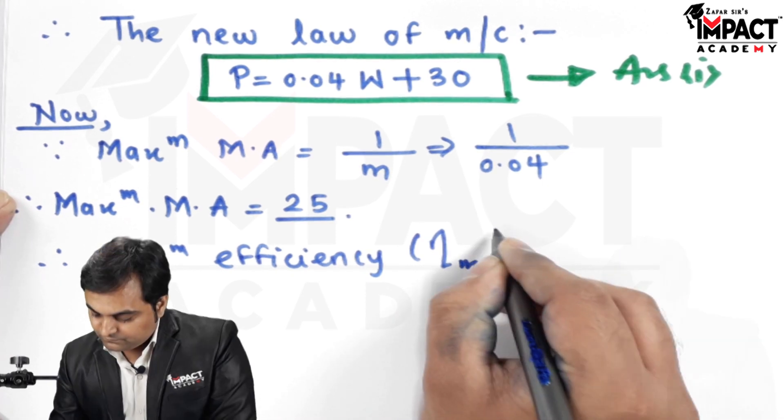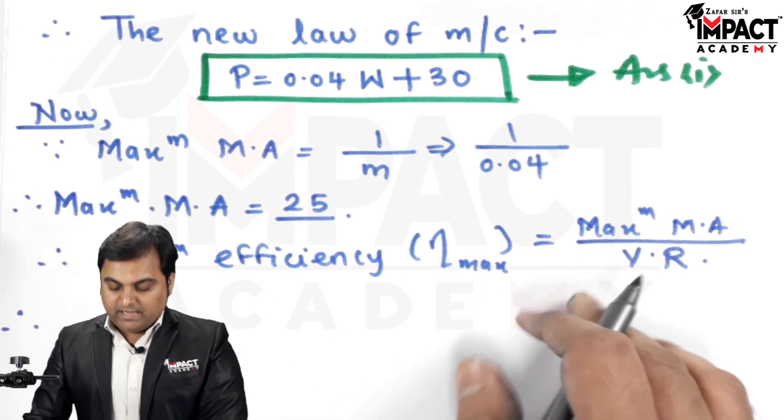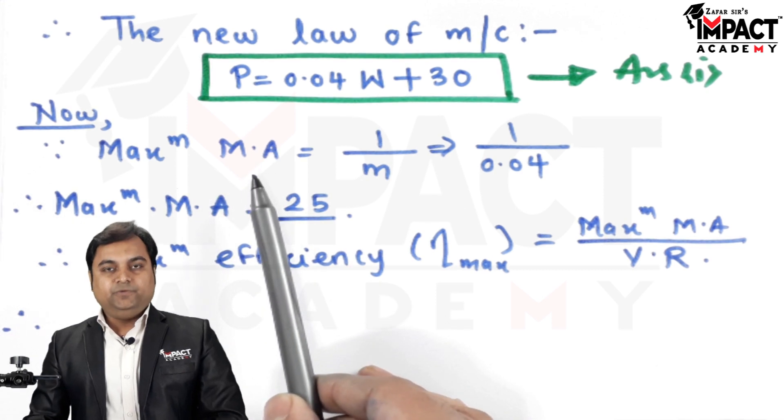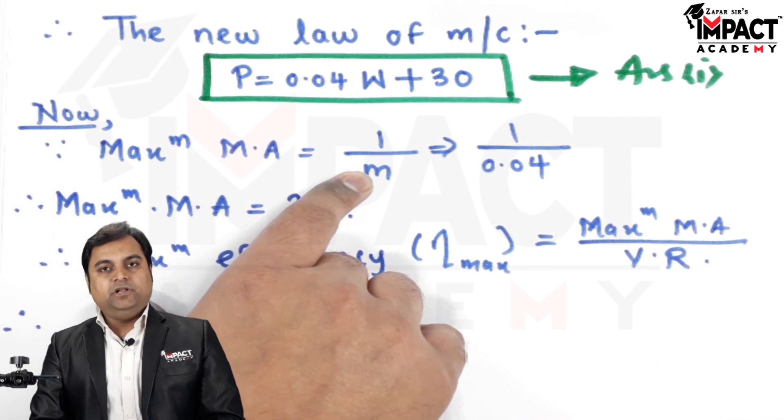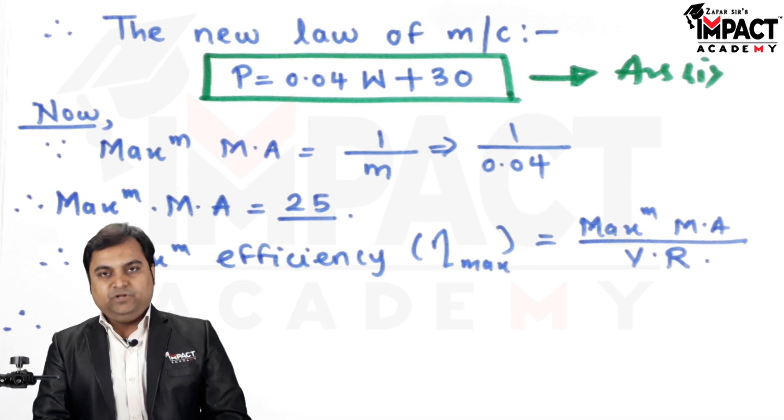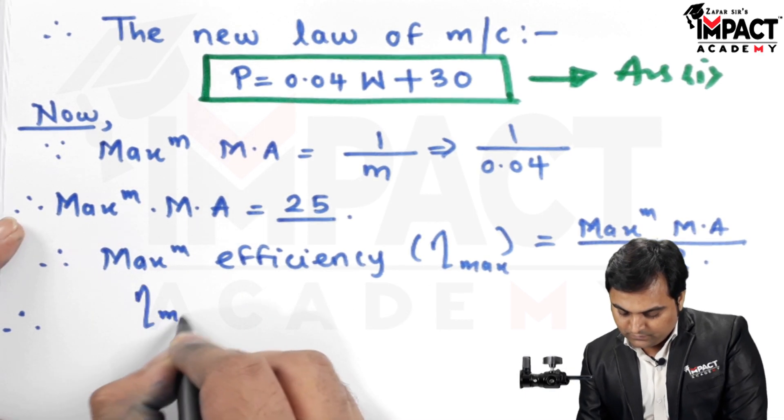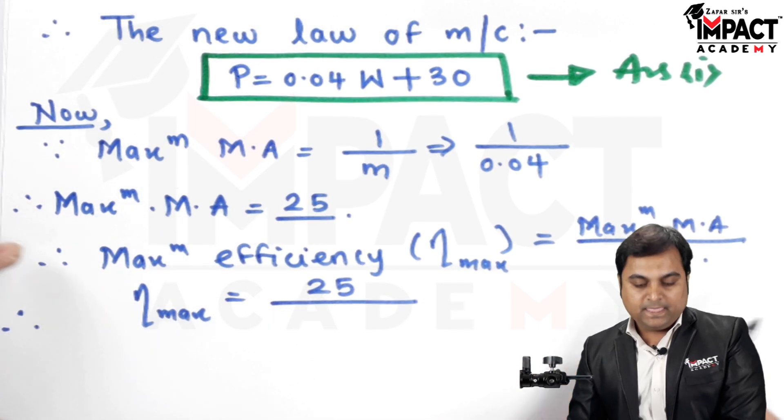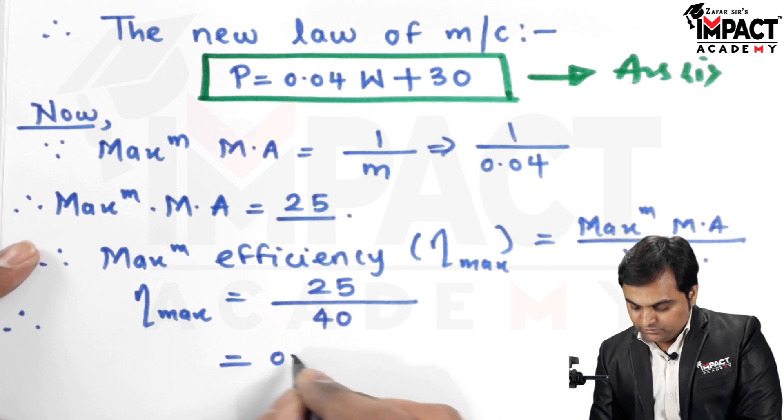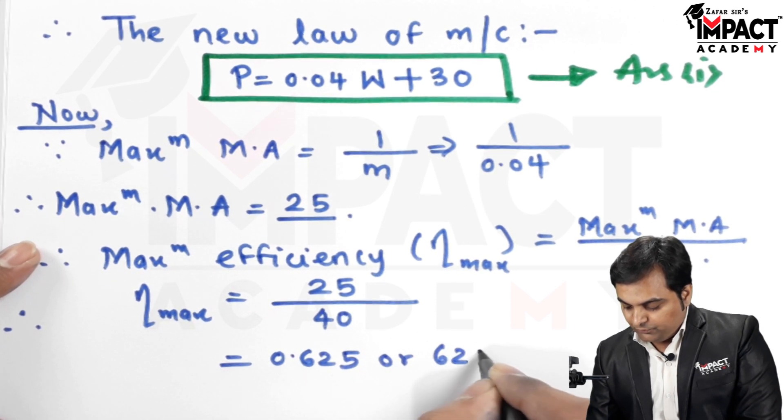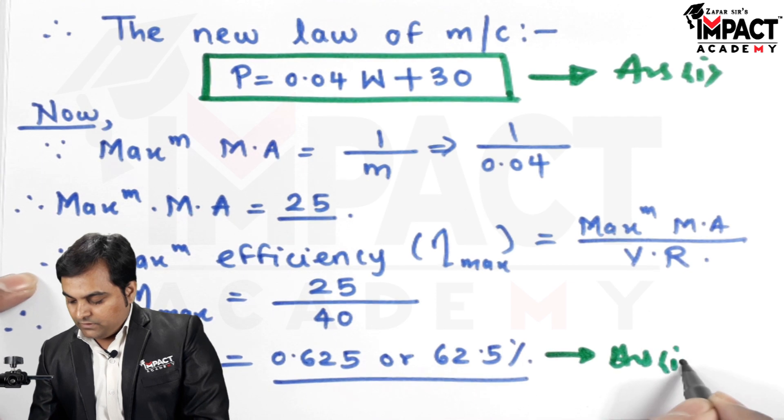Now the maximum efficiency is given by the formula: maximum mechanical advantage upon VR. The maximum mechanical advantage is 25 and VR, the velocity ratio given in the problem, is 40. From this, the efficiency comes out to be 0.625 or 62.5 percent. That's the second answer.